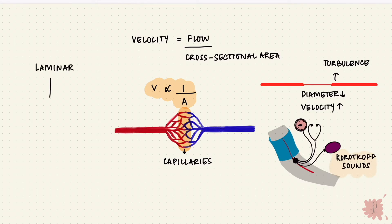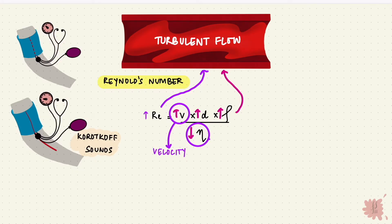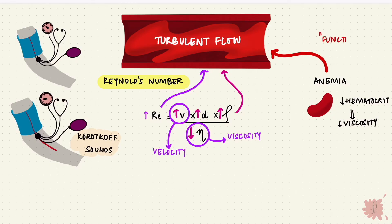The velocity at which laminar flow becomes turbulent is called a critical velocity. Lower the viscosity, more the likelihood of turbulence. So in anemia, where the hematocrit is low, there's a lower viscosity of blood. So that's why they can have turbulence and develop functional murmurs.